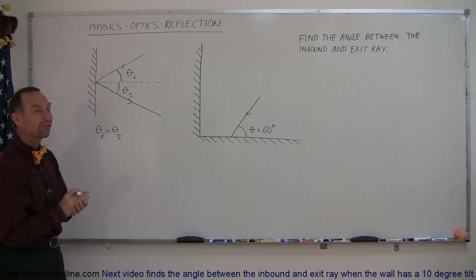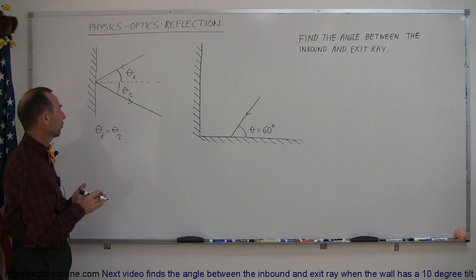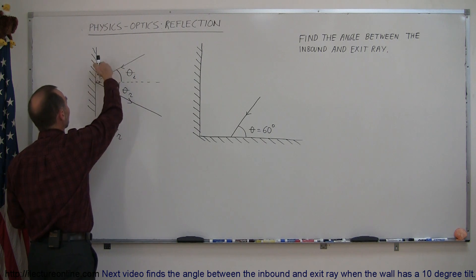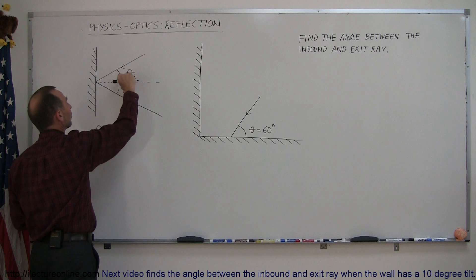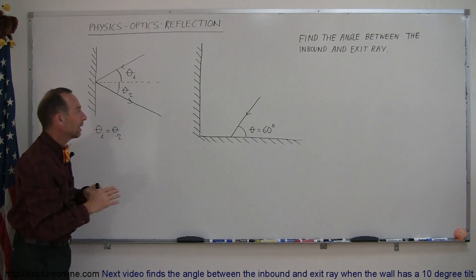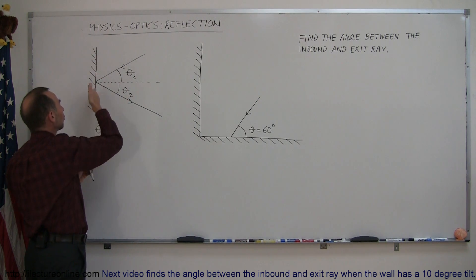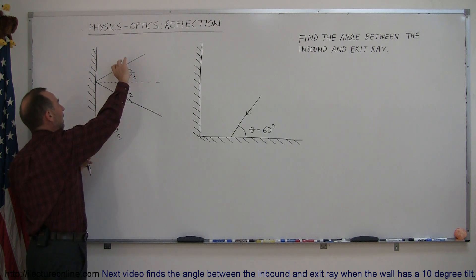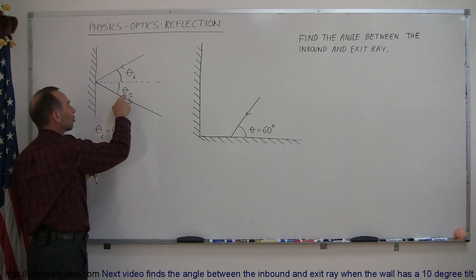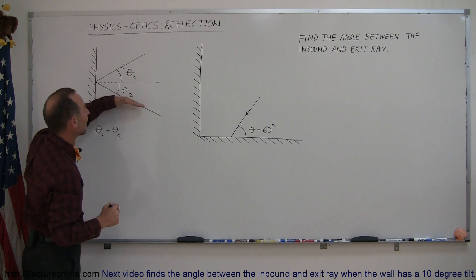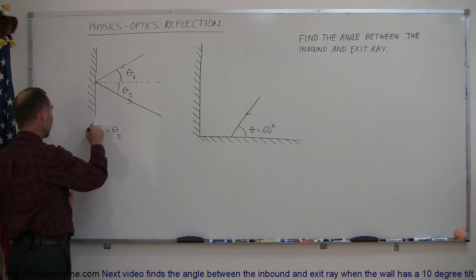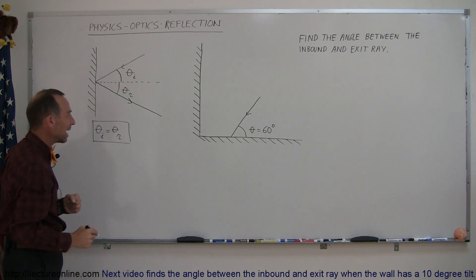The first topic in optics is reflection — reflection of light against a mirror or a shiny surface. Whenever we have an inbound ray reflecting off a shiny surface like a mirror, the angle of incidence, which is the angle between the incoming ray and the normal line to the surface, is always equal to the angle of reflection, theta sub r — the angle between the exiting ray and the normal. So the entire equation comes down to: the angle of incidence equals the angle of reflection.